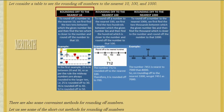Let us take an example. Number 25. In this case, 25 is between the 10s of 20 and 30. So if it is exactly in between, then we will take it as nearest to 30. So when we round the number 25, we will get the answer of 30.